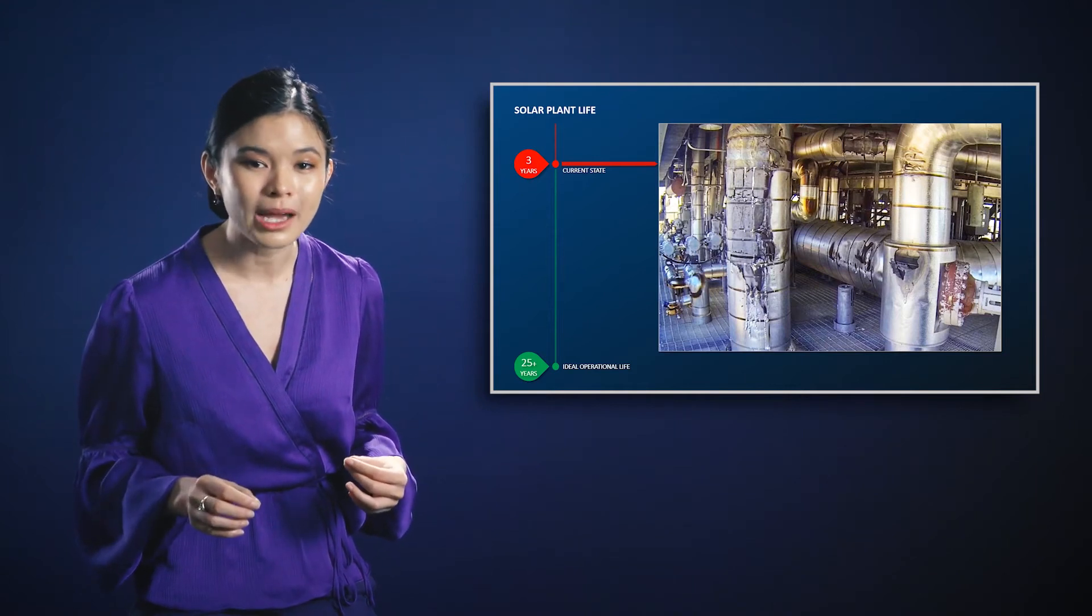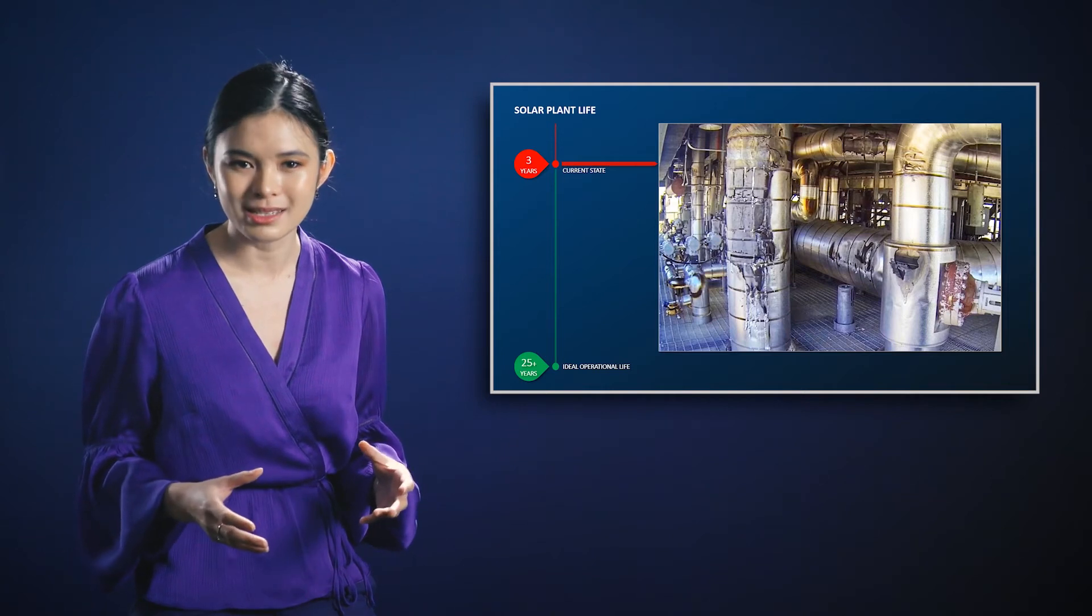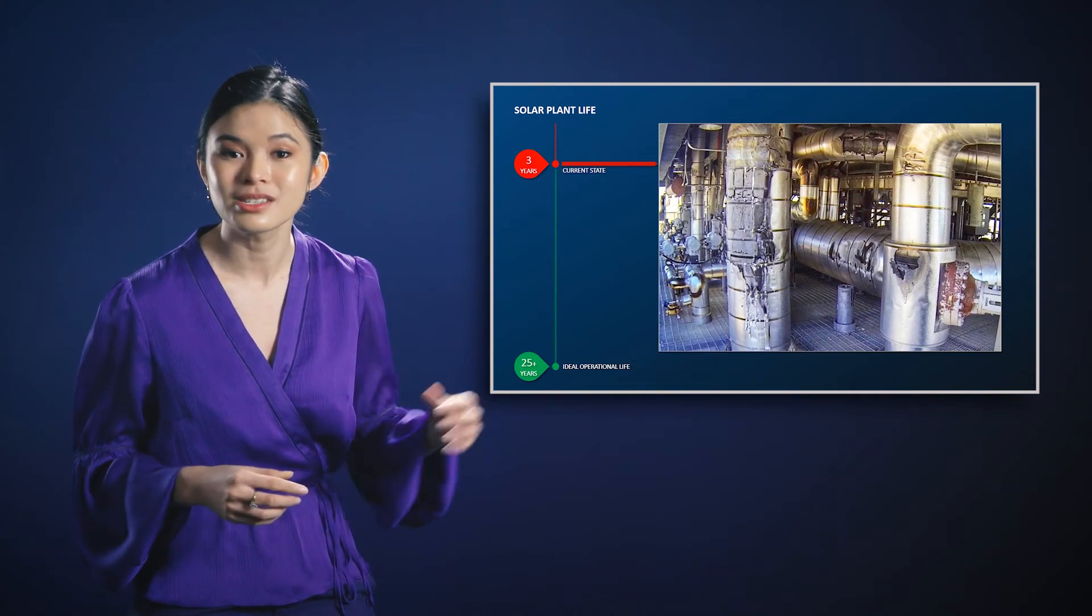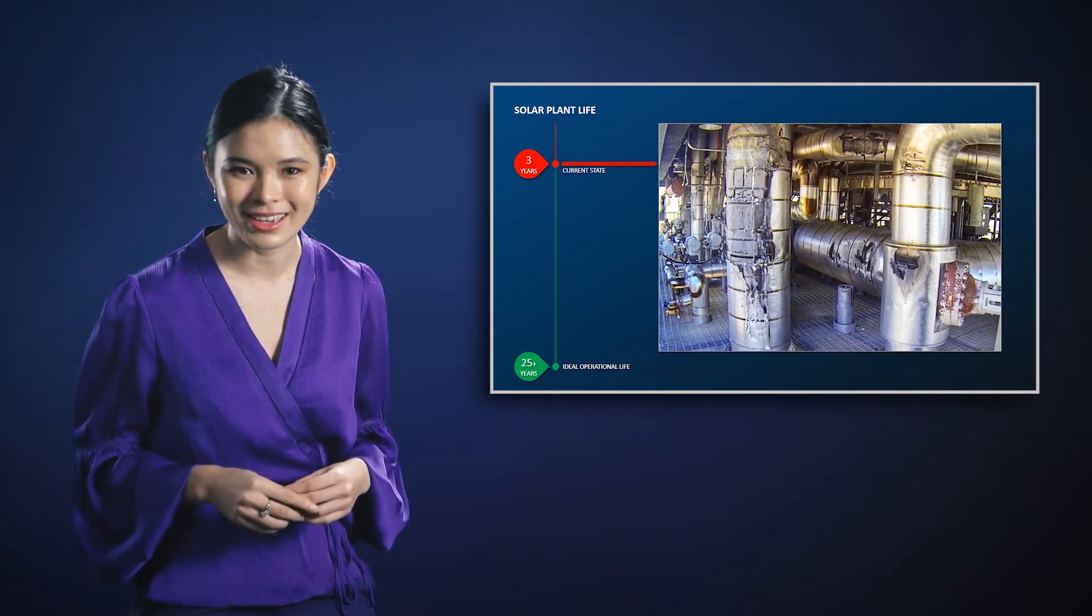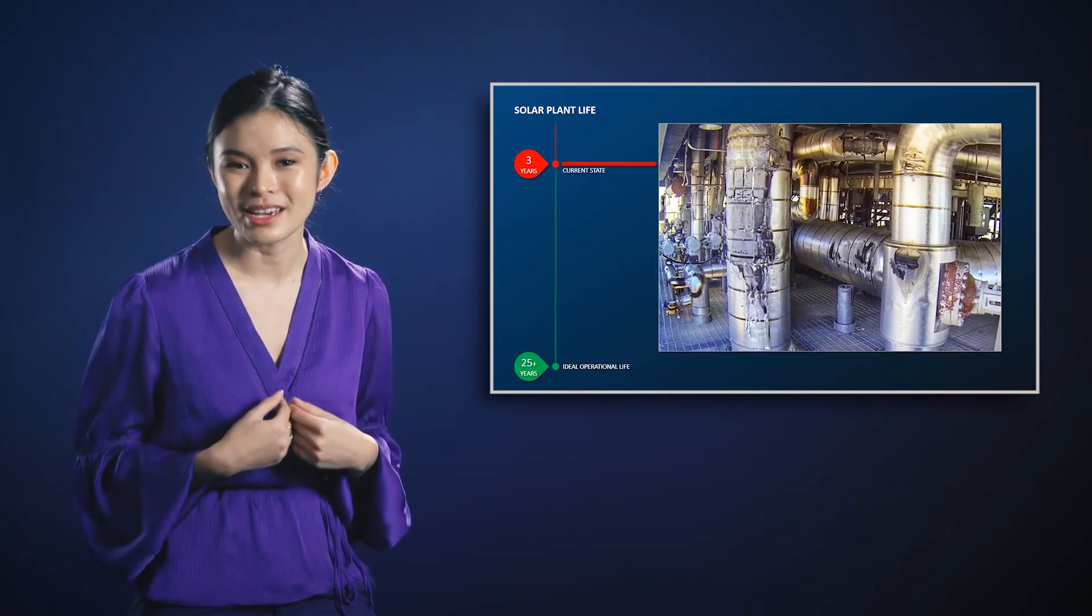they do not account for the combined influence of stress and corrosion in solar power plants, leading to costly and catastrophic failures such as the image here. So how and when these failures occur is really the critical question, and this is the focus of my research.